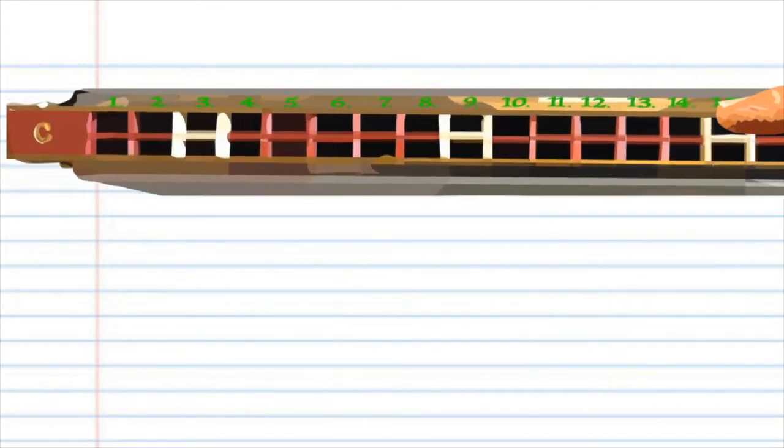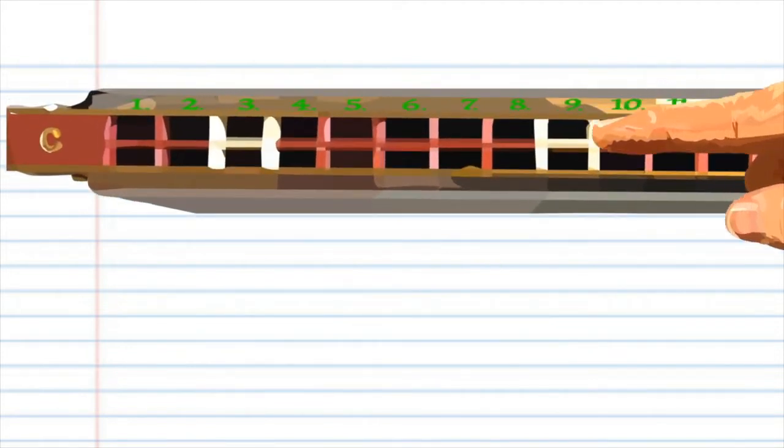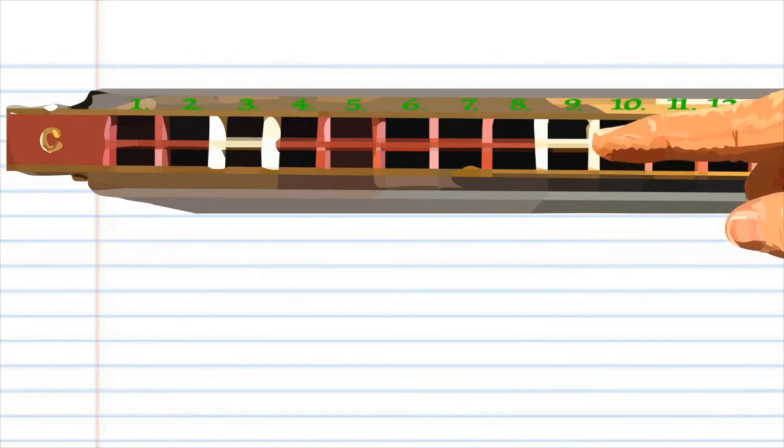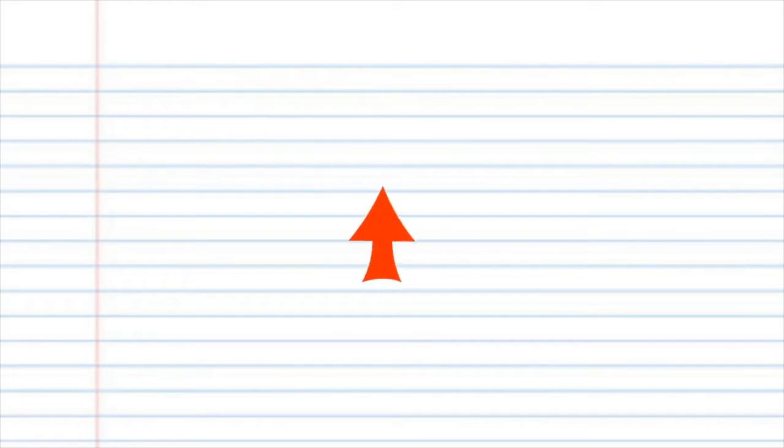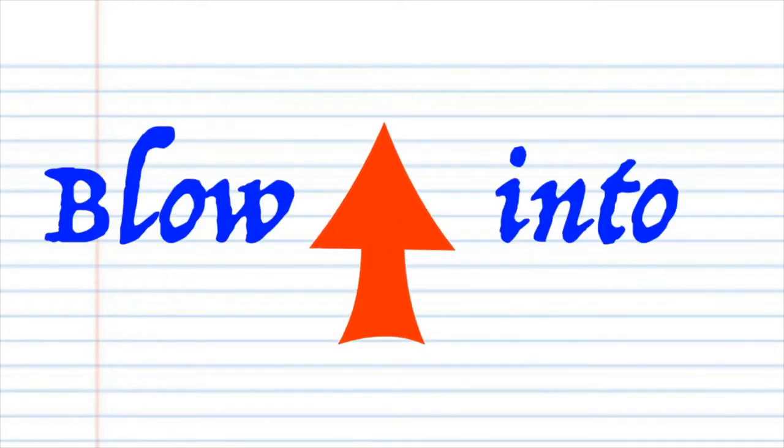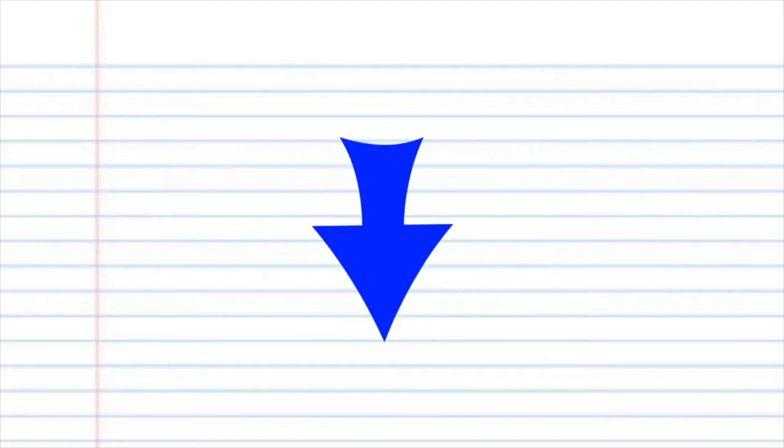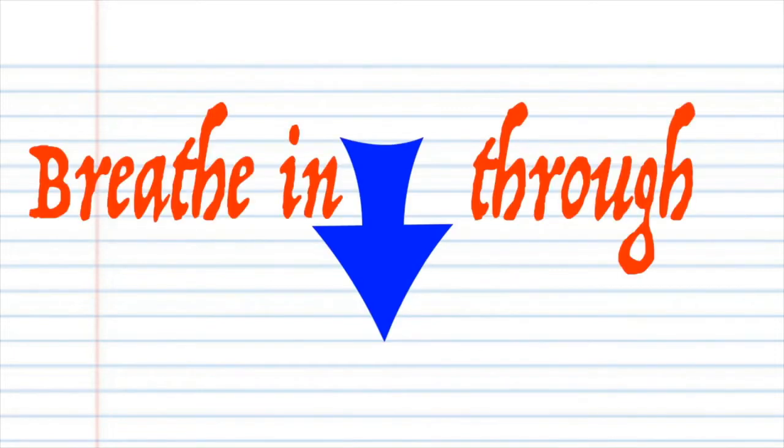You will also notice that each number actually has two corresponding holes, but for this lesson just pretend that there is only one hole and treat them as such. For this lesson, when you see this red arrow it means blow into your tremolo harmonica, and when you see this blue arrow it means breathe in through your tremolo harmonica.